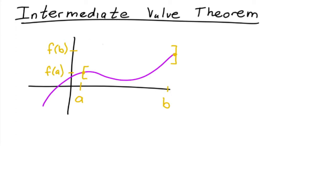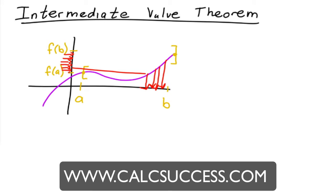What the Intermediate Value Theorem says is that for every Y value in between F of A and F of B, if this function is continuous, then there has to be at least one corresponding X value — which makes sense. So each one of the Y values from F of A to F of B has a corresponding X value. If it's continuous, that holds.